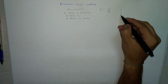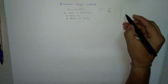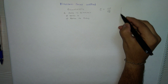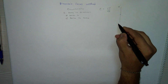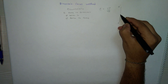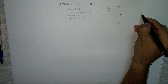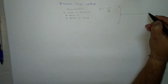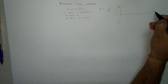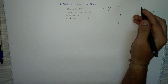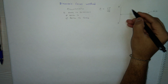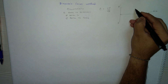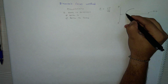Now, what is vertex, focus, and directrix? The directrix is a vertical line. From any point on this directrix, we draw a line perpendicular to it, and this line is called the axis.